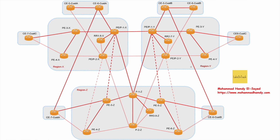The network consists of three main regions: Region X, Region Y, and Region Z. Region X and Region Y are identical — they have two routers functioning as PE-P routers. The PE router connects to customer routers, and the P router connects to other PE routers. For example, PE-P1X is router number one in its region, functioning as a PE-P router residing in Region X, and is connected to PE-P1Y.